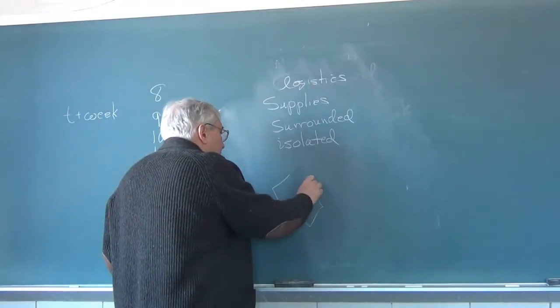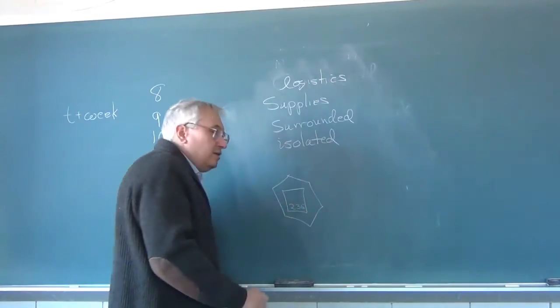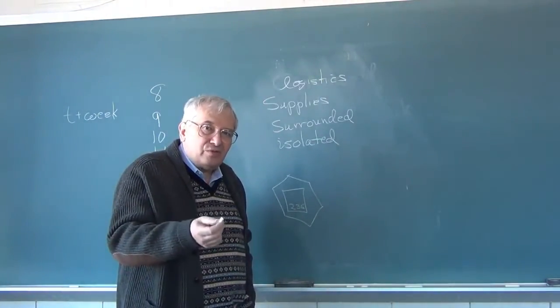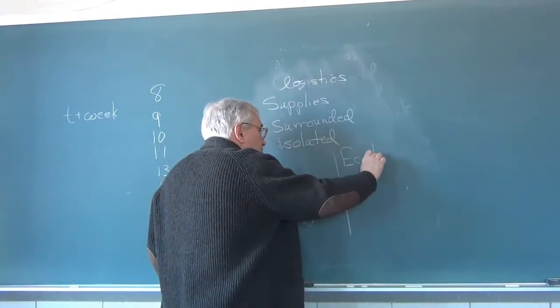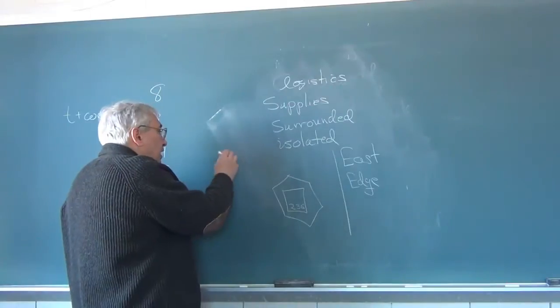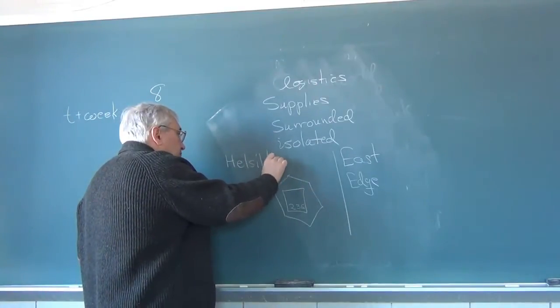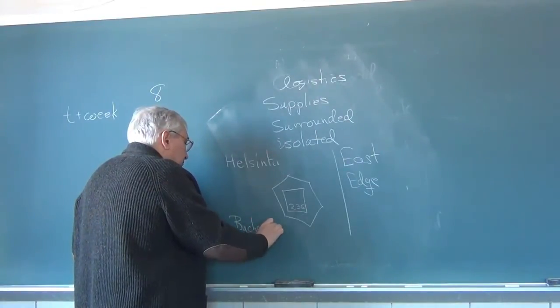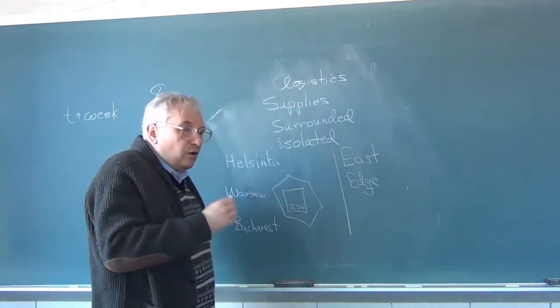The simplest one refers to combat units. Here's a hexagon. There's a combat unit in it. And in order to be in supply, the combat unit has to be able to trace a line of supply to a supply source. For the Russians, the supply source is any square on the east edge of the map. For the Germans, the supply source are three cities, namely Helsinki, Bucharest, and Warsaw.